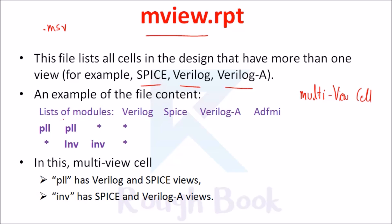For example, the file content lists modules such as verilog, spice, verilog, and adfmi. Here, PLL has verilog and spice views, and inv has spice and verilog views. This is a simple example of the file content showing multi-view cells.